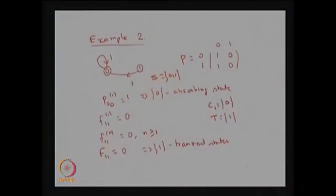If any closed communicating class has only one element, it is called an absorbing state. Therefore state 0 is the absorbing state and state 1 is the transient state. Since C1 union T equals the state space S, this Markov chain is not irreducible; therefore it is called a reducible Markov chain.